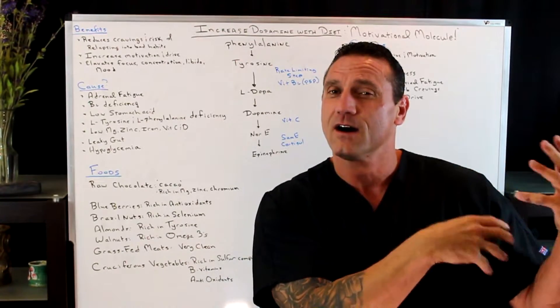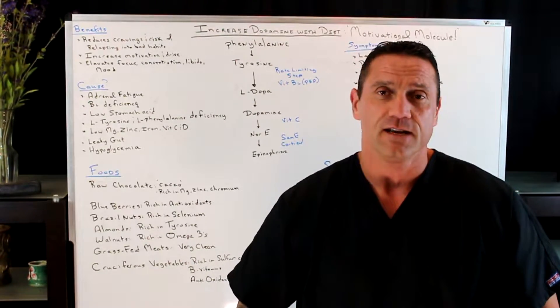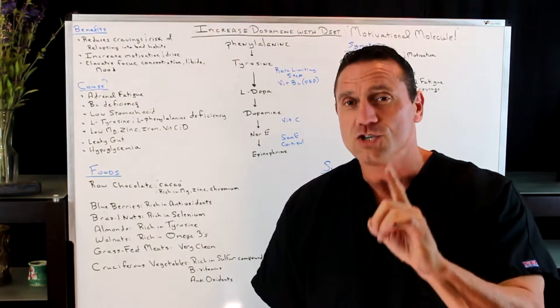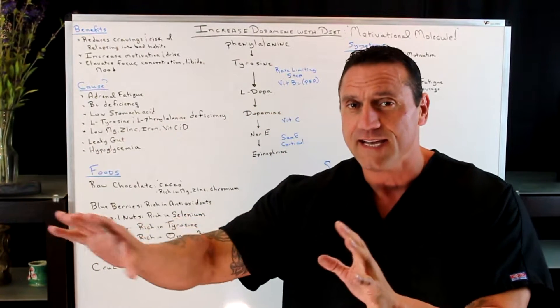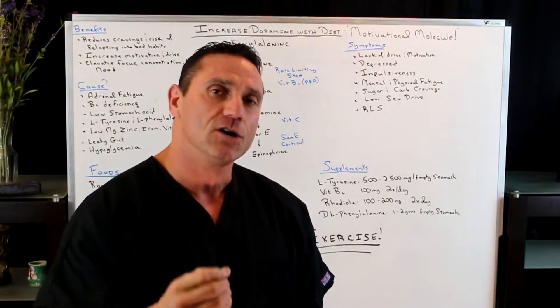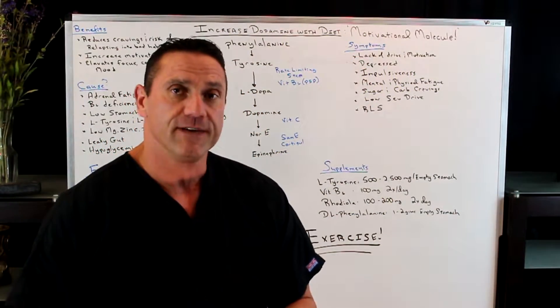Serotonin makes you calm down. Serotonin, most of it's produced in the gut. A little bit is produced in the brain. However, dopamine gives you a lot of that drive and motivation. And if you lack dopamine, the symptoms of low dopamine levels are lack of drive and motivation.